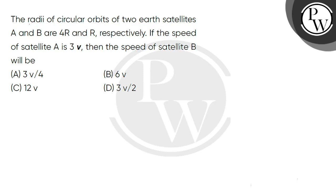Hello guys, let's read the question. The radii of circular orbits of two Earth satellites A and B are 4R and R respectively. If the speed of satellite A is 3V, then the speed of satellite B will be?